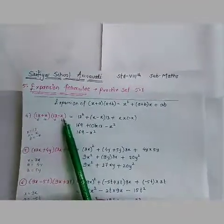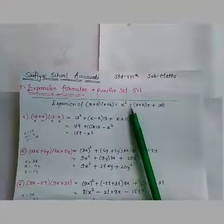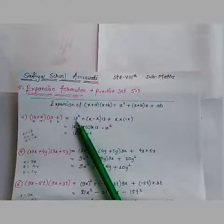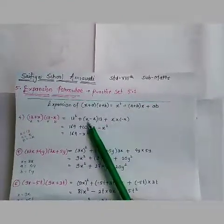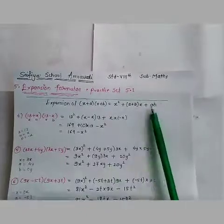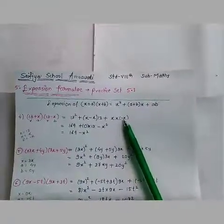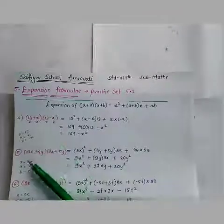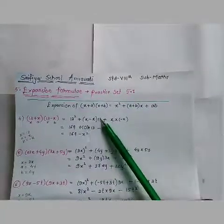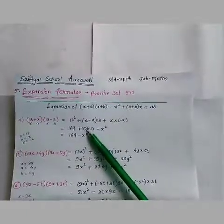So we will take b as minus x and put values in the expanded form, which is x² + (a+b)x + ab. x² means x ki value is 13, so we write 13², that is 169. Then plus (a+b): a is x and b is minus x, so x + (minus x) = 0, into 13. So 0 into 13 is 0. When we multiply 0 with any number the answer is always 0.